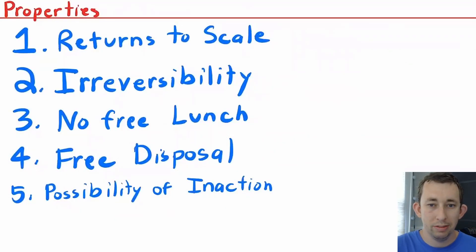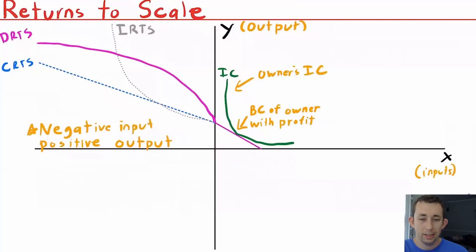Here are the properties of production functions that I'm going to talk about today. Again, all graphically. None of these are surprising: returns to scale, reversibility, no free lunch—we'll probably talk about two and three together on one graph—free disposal, and possibility of inaction. We're going to start off with returns to scale and describe how we graph production sets, because it might look different than some other graphs you've seen before.